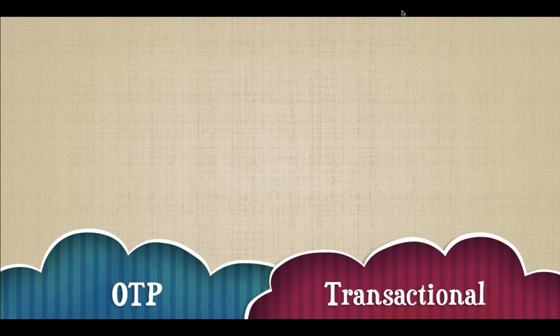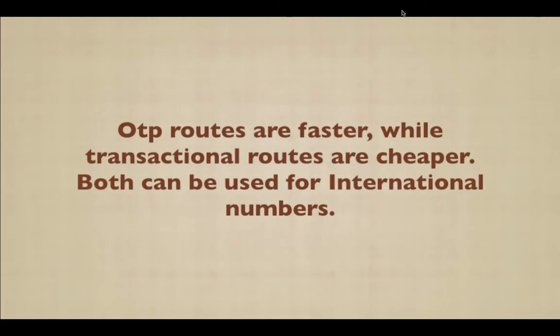OTP routes are actually faster while transactional routes are cheaper. Both can be used for international numbers as well. You can go to Message91, create an account, and then call them to choose between either the OTP route or the transactional route. If you go for the OTP route it's going to be faster compared to the transactional route. You can buy OTP credits or transactional credits.